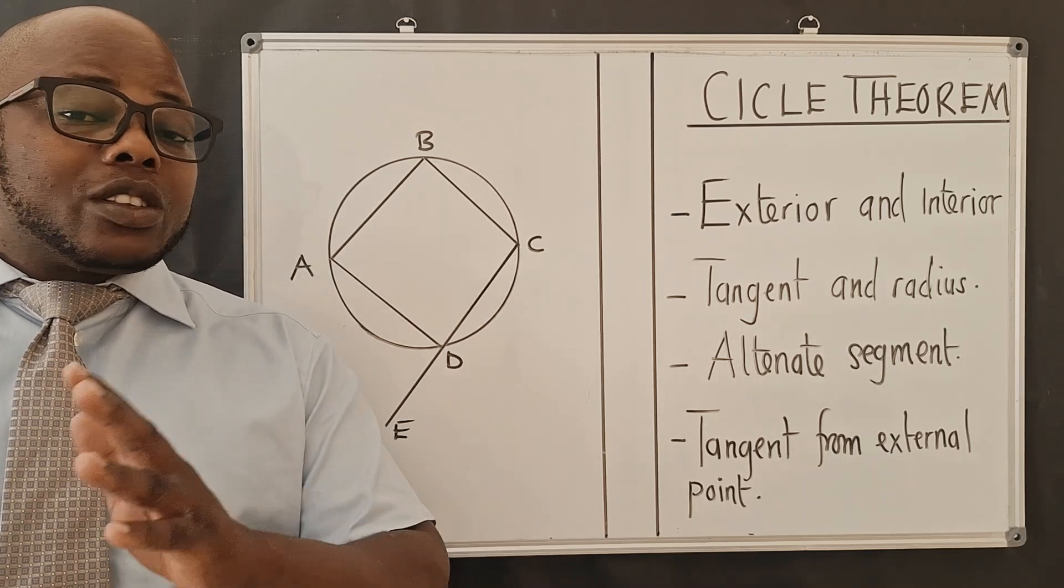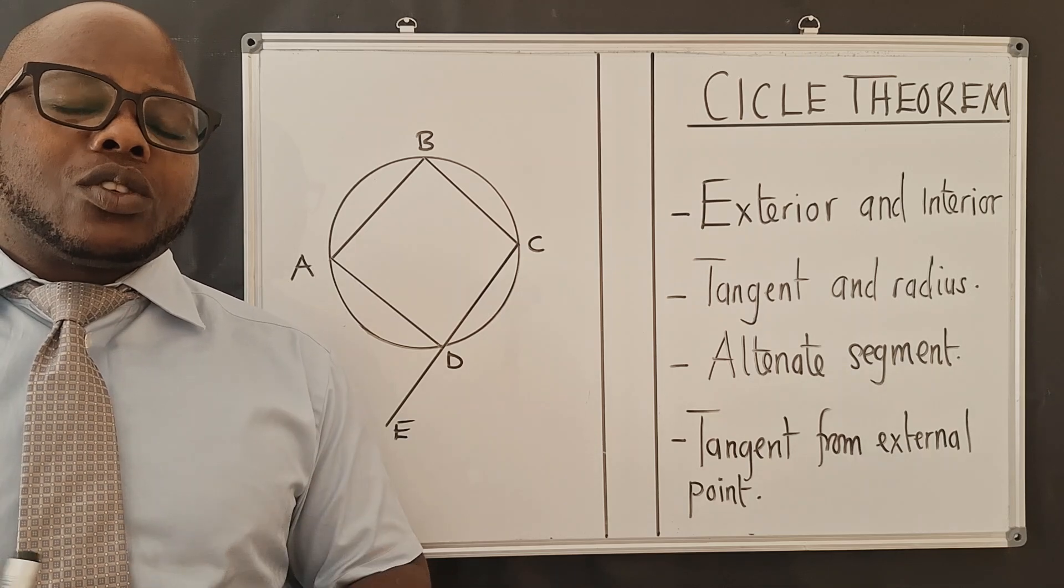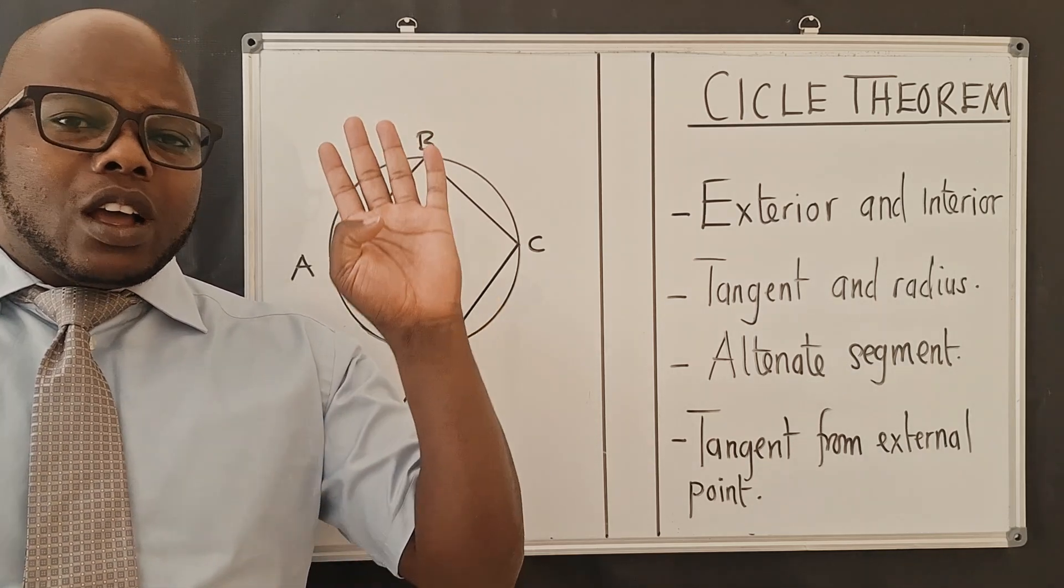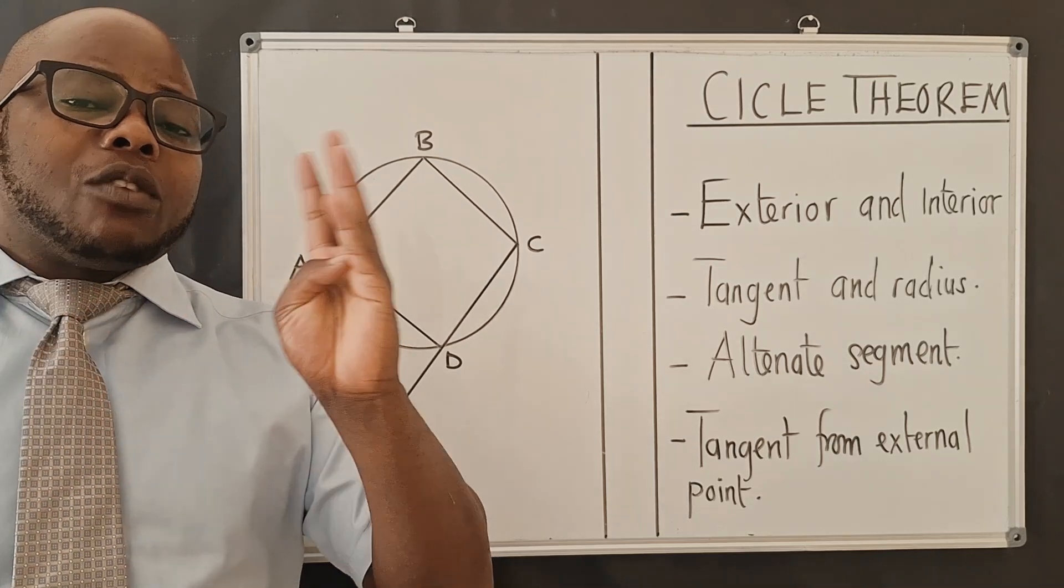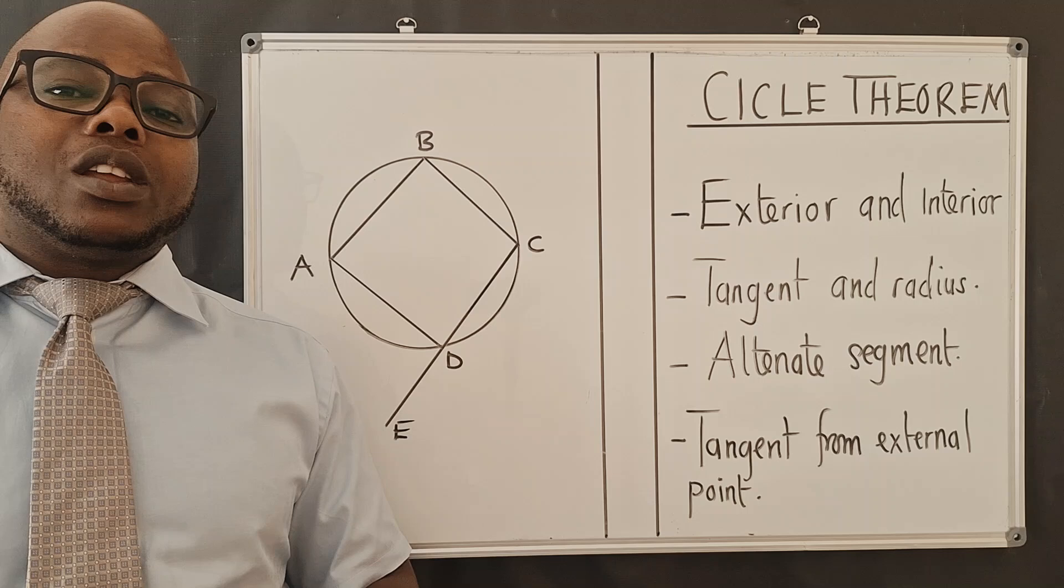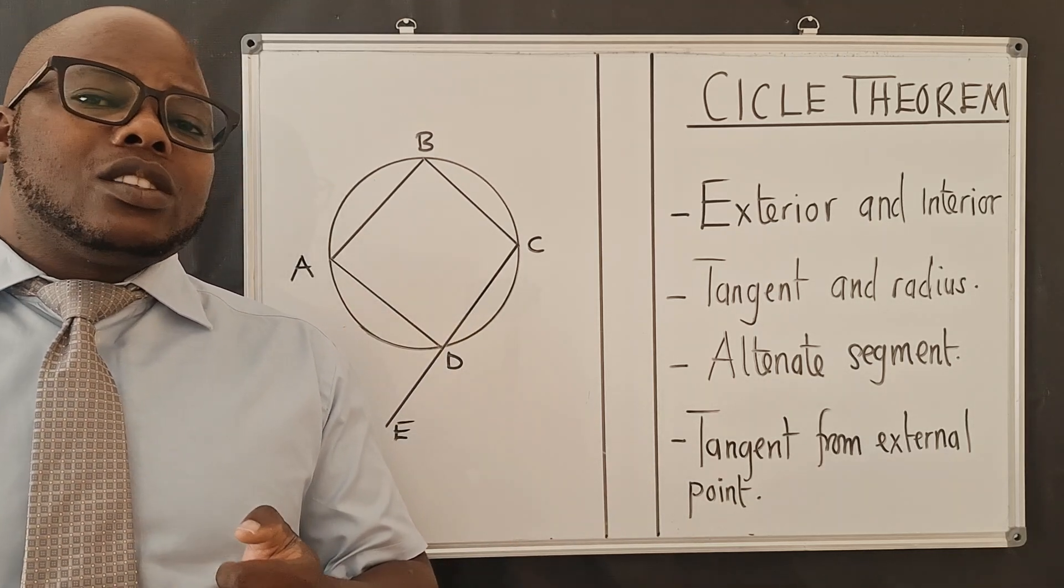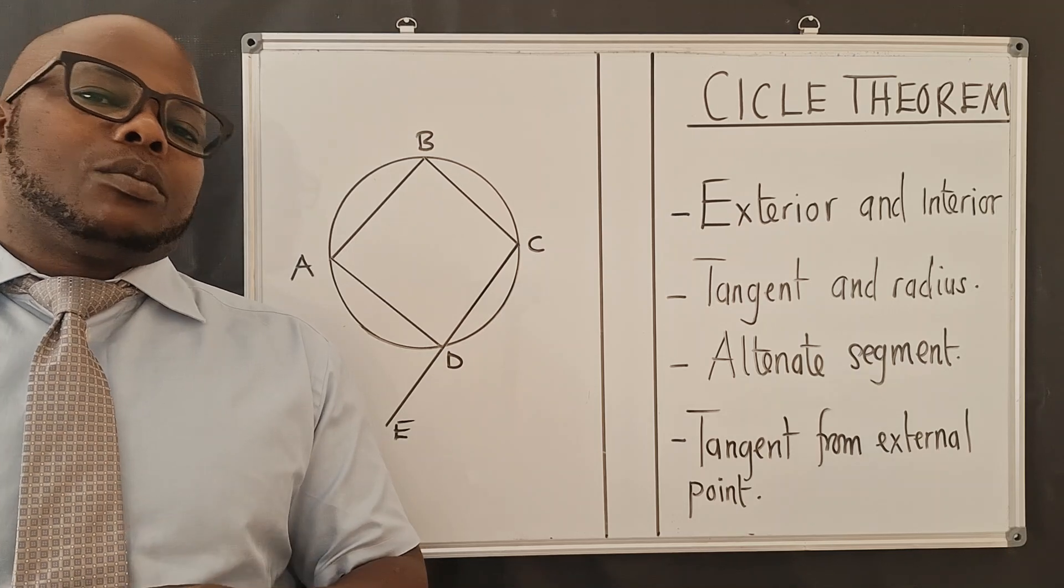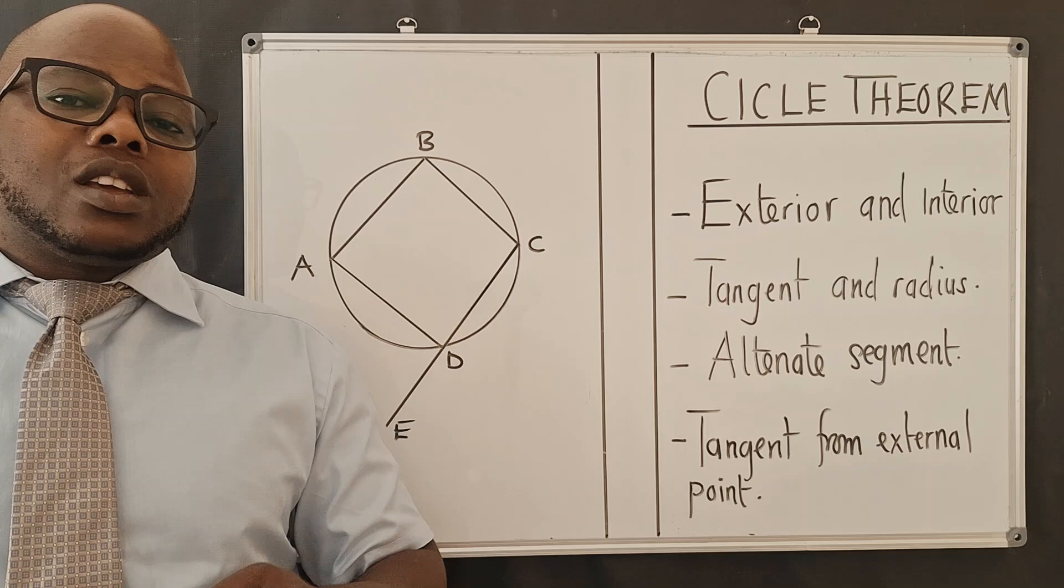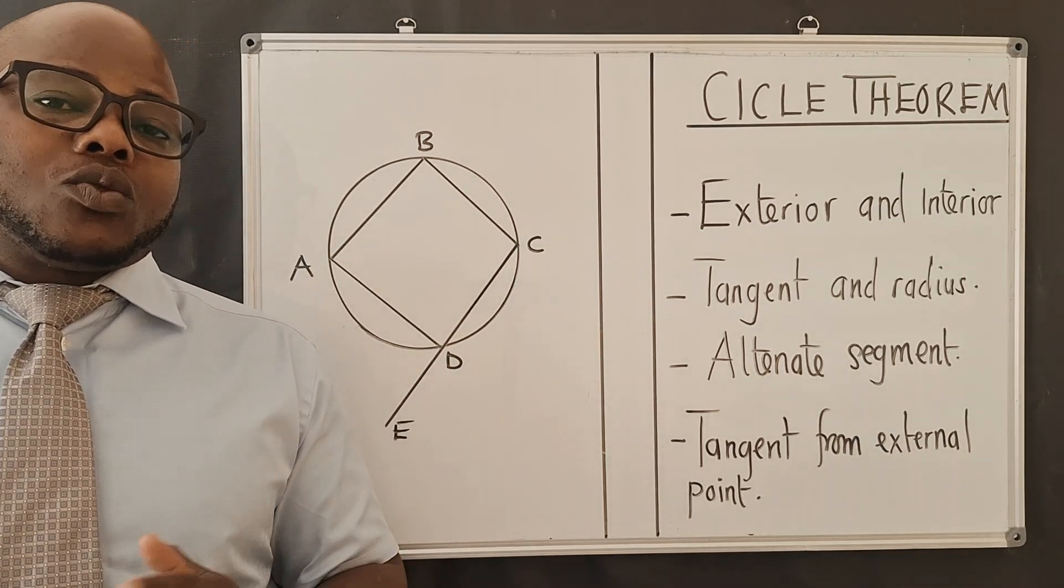And in this lesson, which is lesson number three, we'll talk about the remaining four properties under circle theorem. Please note that under circle theorem, there are eight properties that you need to know. We've covered four, we are now finishing the remaining four properties. If you did not watch the first lesson and second lesson, please click on the link in the description below. They'll take you to where the video for lesson one and lesson two are.